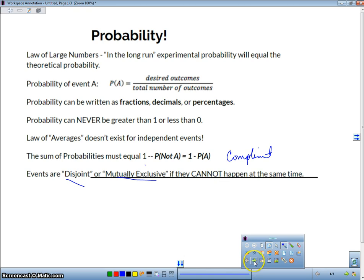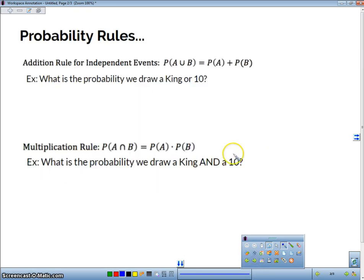We got two more actually, and some examples to follow that. So two of the big important probability rules here are the addition rule and the addition rules for independent events. It looks like this. If I have two events, the probability of A or, this is this little thing here is a union, it means or. The probability of A or B happening is equal to the probability of A plus the probability of B happening separately.